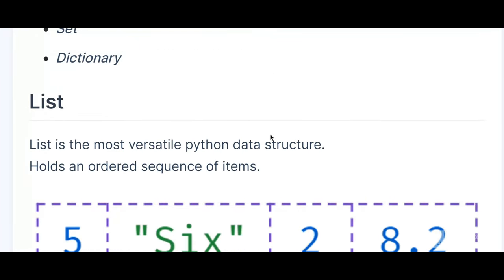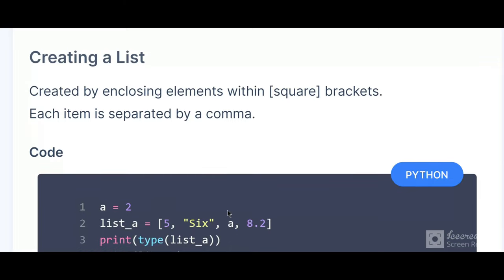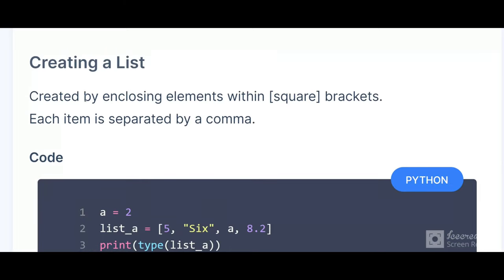A list is a versatile Python data structure that holds an ordered sequence of items. Lists are created by enclosing elements within square brackets, and by using a comma you can separate the values. It's as simple as that — square brackets to create it, comma to separate the values.